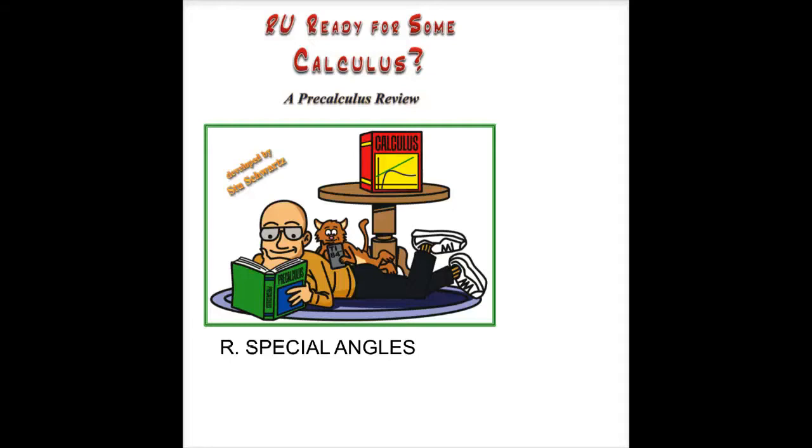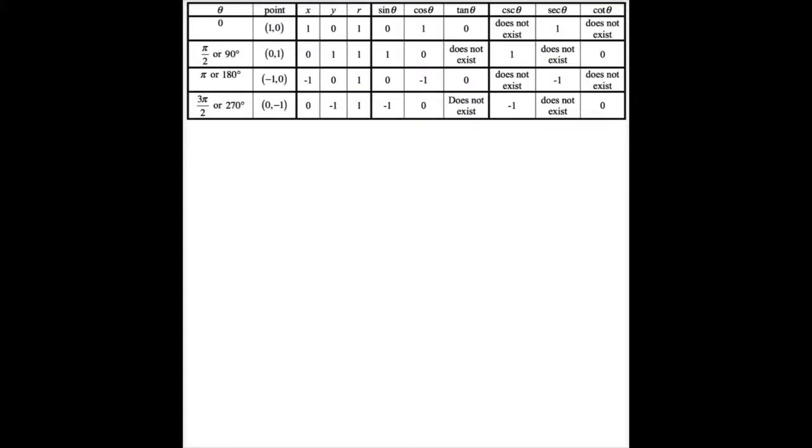There are special angles in calculus that you need to be very comfortable with. I'm giving it to you in both radians and degrees, but in calculus we refer to things in radians. So when I say pi over 2, you can think 90 degrees, but you need to pop back to pi over 2. Pi is 180 degrees, and 3 pi over 2 is 270.